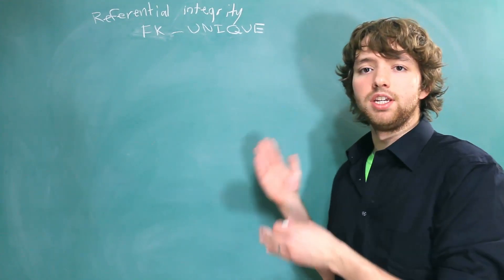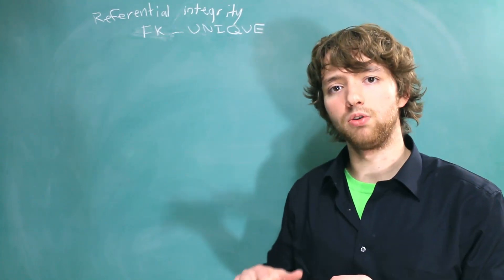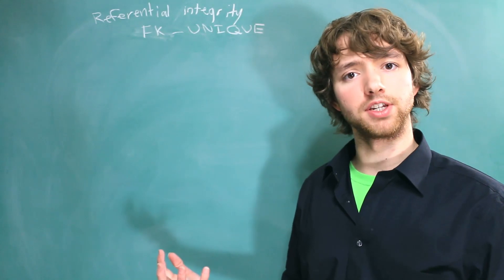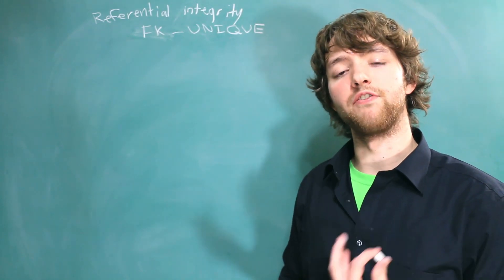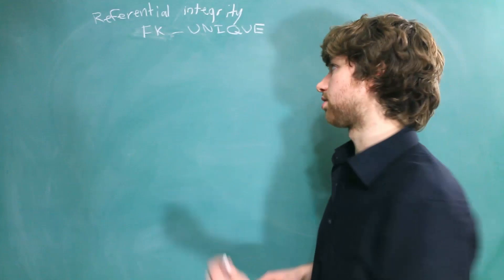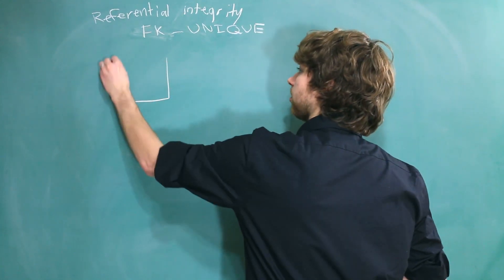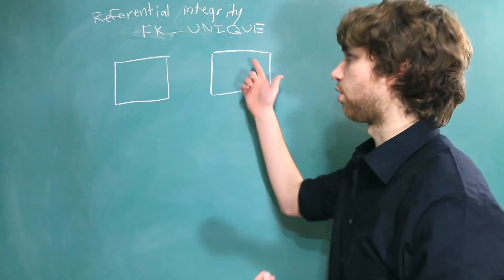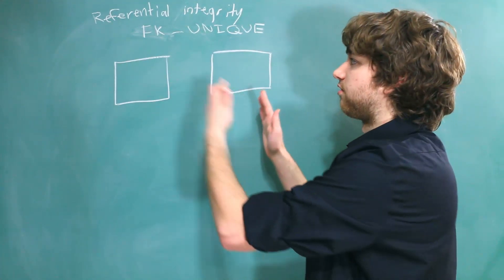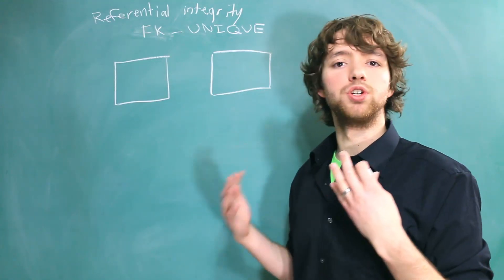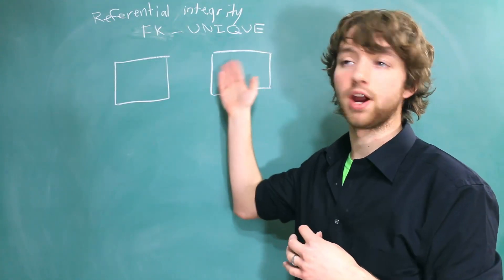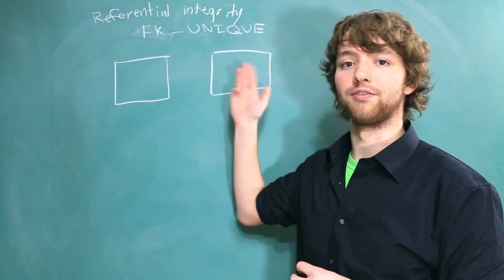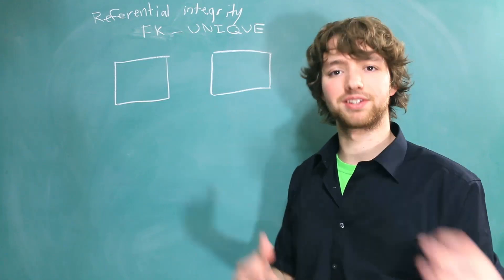We can make foreign keys in our head and not actually code them out — not actually say, hey, this column references this column. In that case, we still have references, but the only problem is we're not enforcing those references in the database. So that means we have a table over here and a table over here, and this table references that table, but we're not allowed to draw the arrow. It's divided from the parent, and you just have to assume or hope that all the data is correct — which the chances are it's not going to be if you're not using the right referential integrity rules.